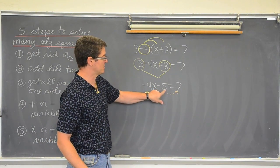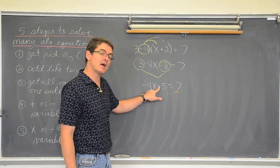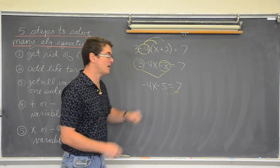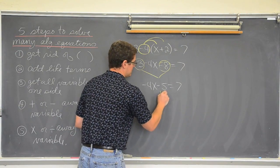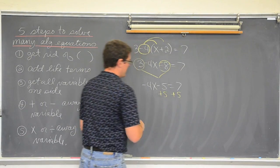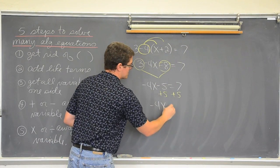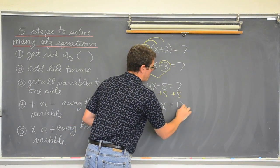This x has a 5 attached to it and we are going to undo that subtraction with addition, the opposite operation. So we are going to add 5 to both sides and get negative 4x equals 7 and 5 is 12.